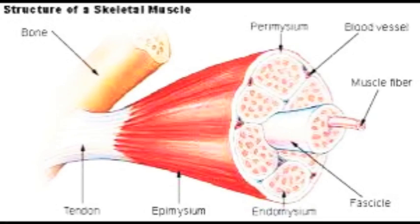Each muscle is surrounded by the epimysium. Each muscle is made up of many fascicles. Each fascicle is surrounded by the perimysium. And each fascicle is made up of many muscle fibers. Each muscle fiber is surrounded by the endomysium.